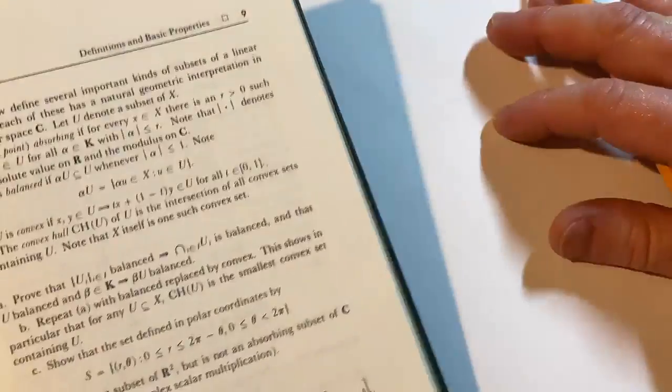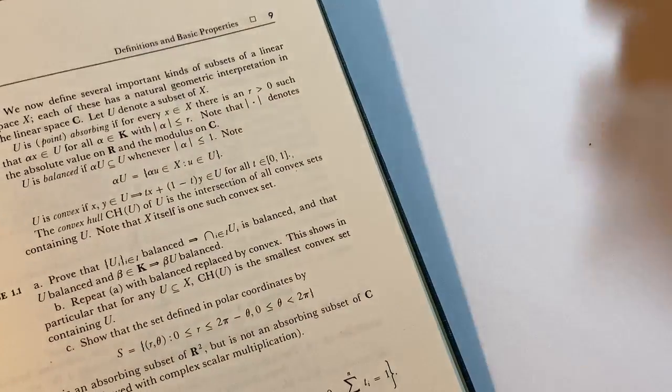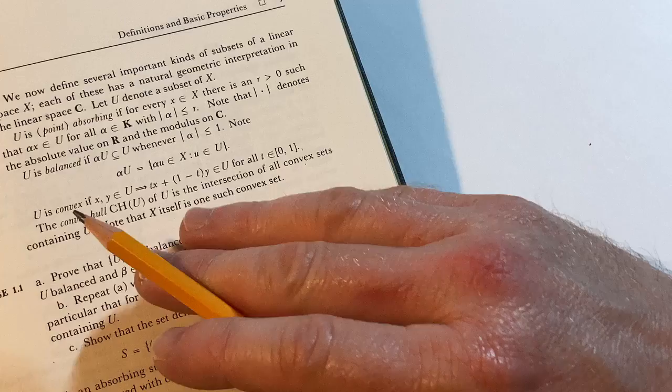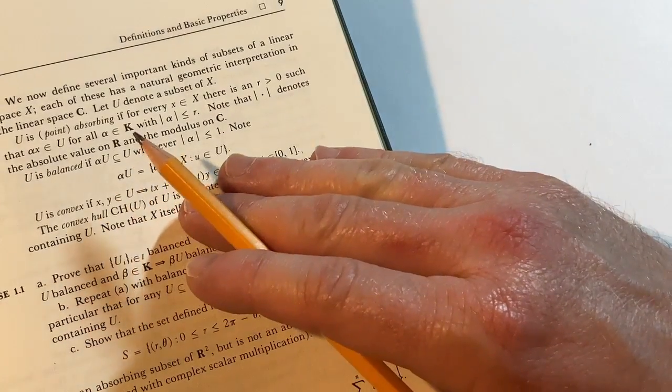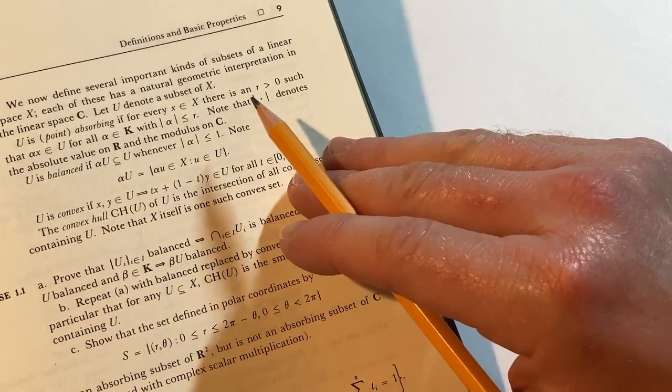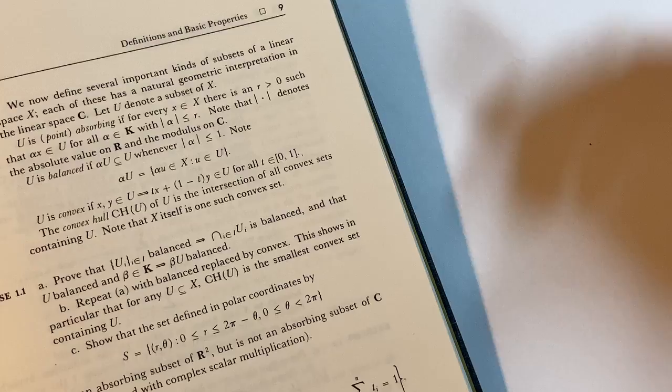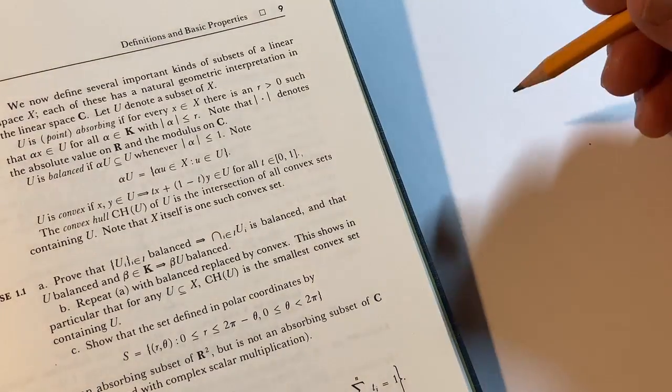Okay. Then they indicate that the bars denotes the absolute value in R and the modulus in C. Very nice. So you can do it for real or complex numbers. I love how that just simplifies so much, right? The modulus pretty much reduces to the absolute value if you look at the formula. So let's focus on this. U is point absorbing. If for every X in X, there is an R greater than zero. So you read that. And if it's too much for you, this is what you do. This is how you actually learn.